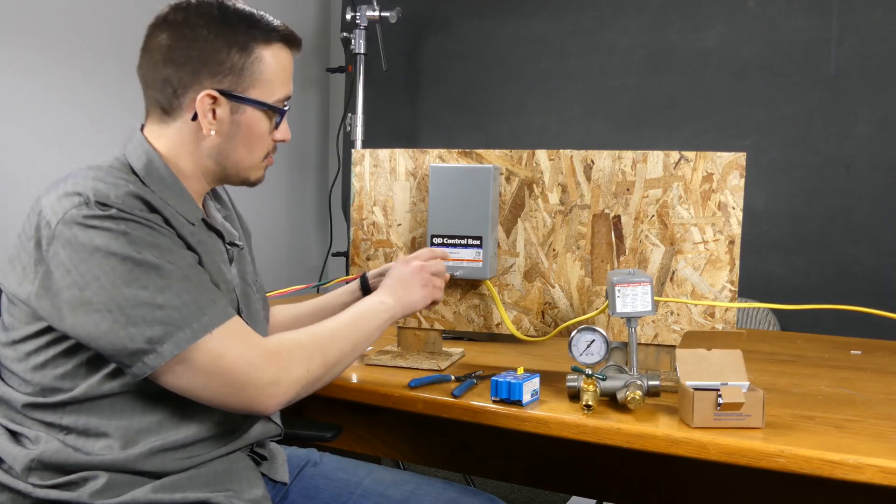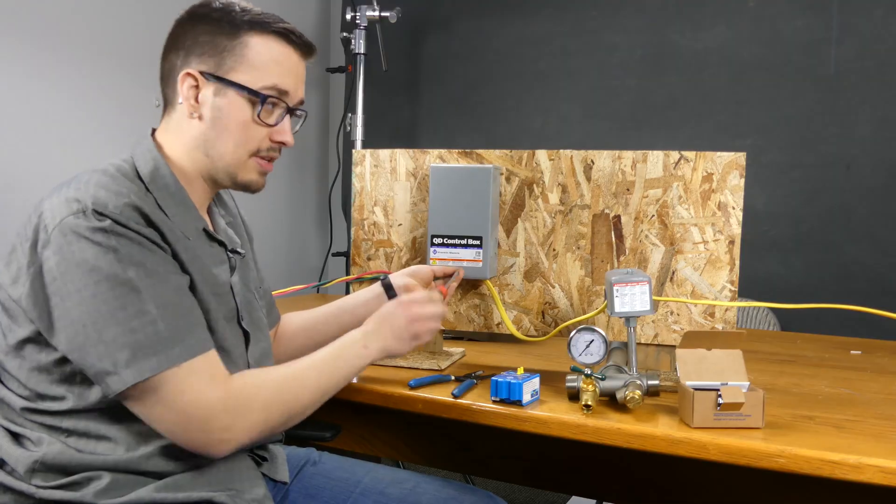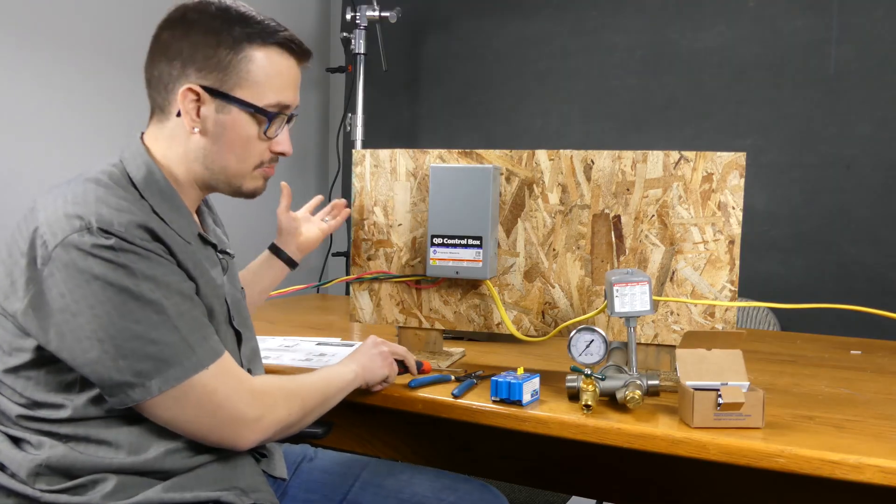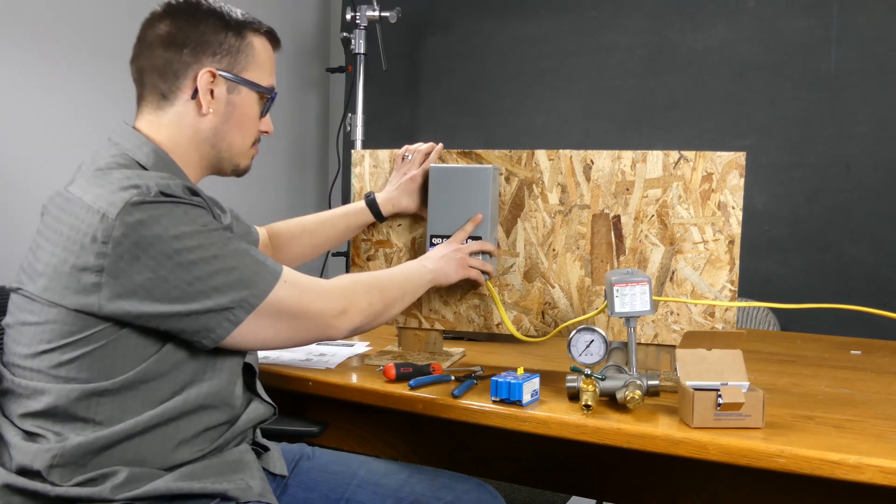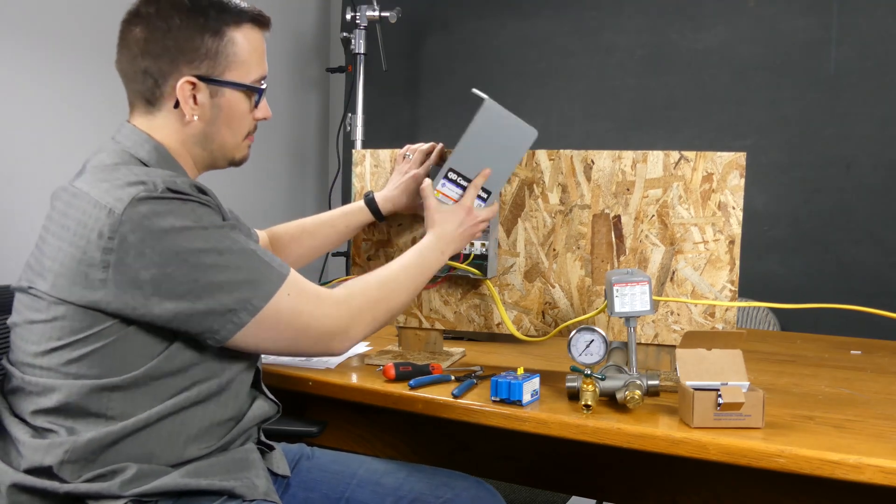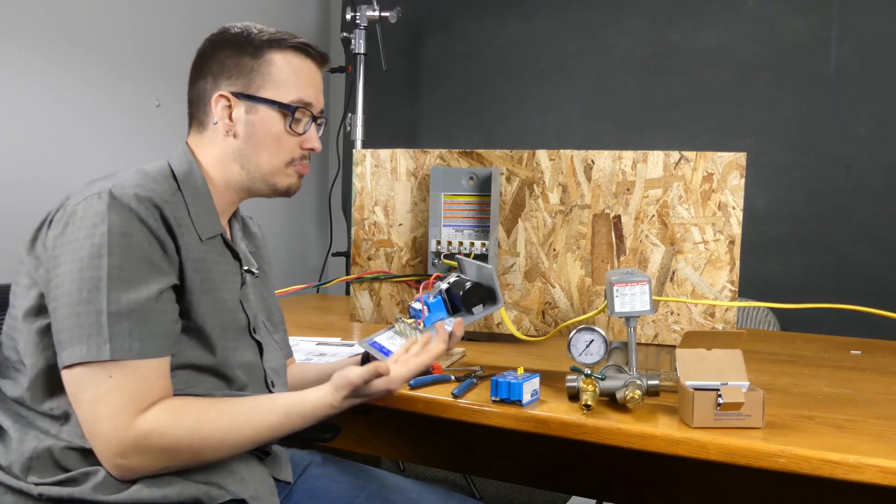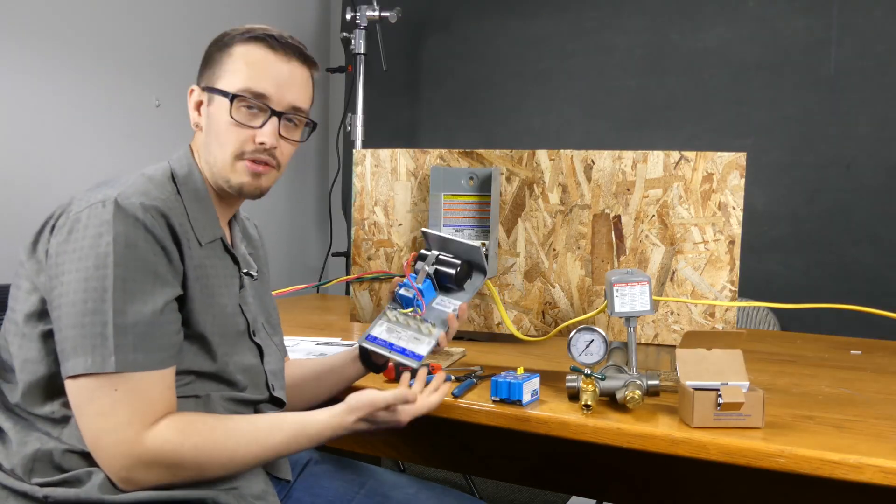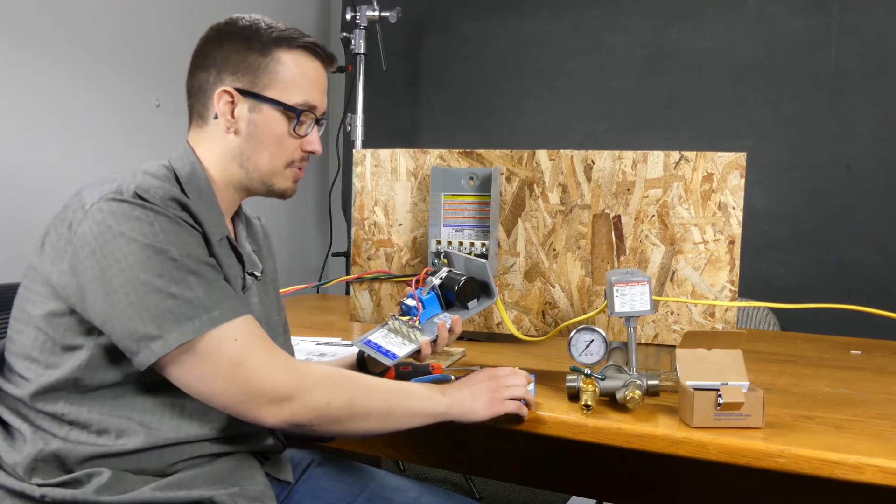So first we'll just pop this box open. Of course, the breaker's going to be off. And then in this situation, this is a demo so we don't have a breaker. But if you were working with live power, make sure the breaker's off. And with the QD boxes, I guess you could potentially install this without turning the breaker off, but it's important to be safe.